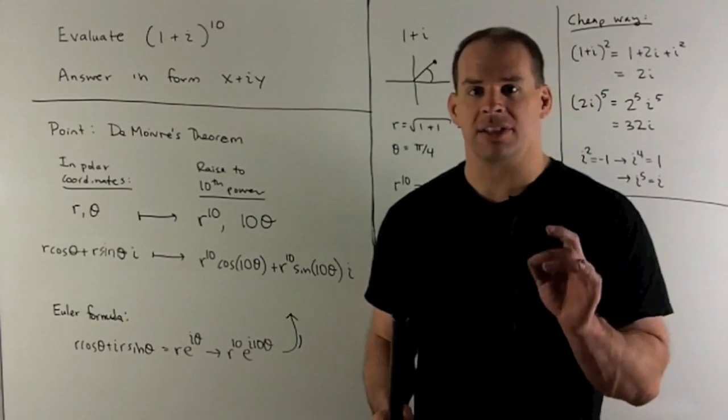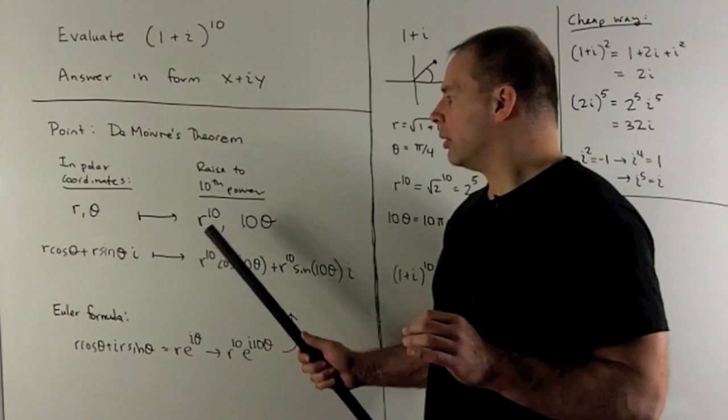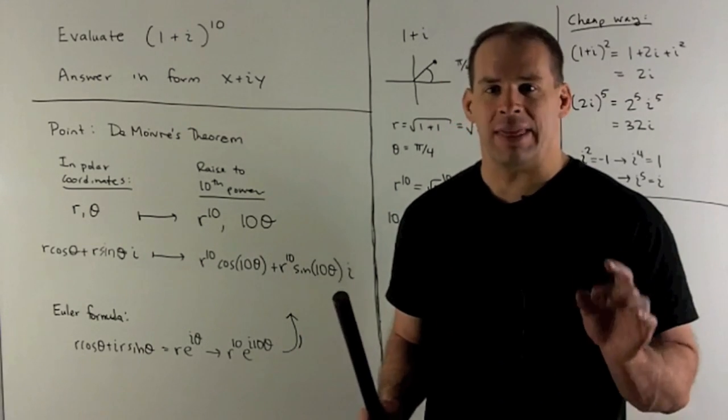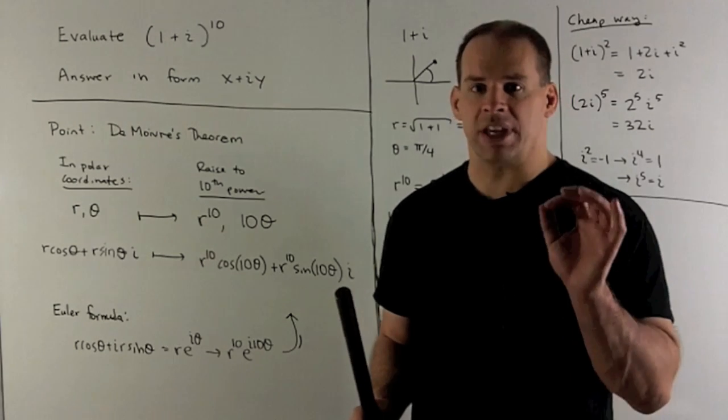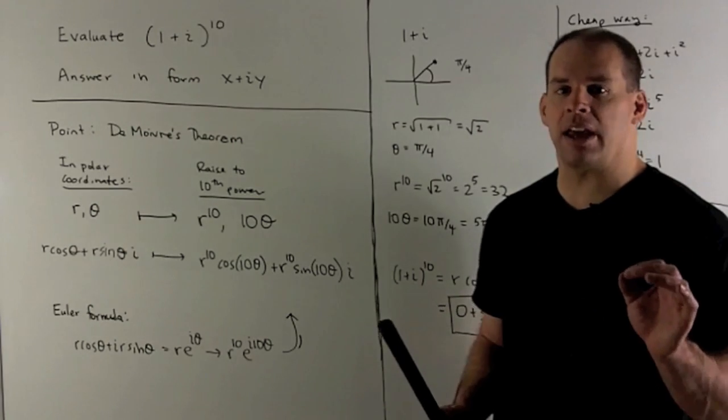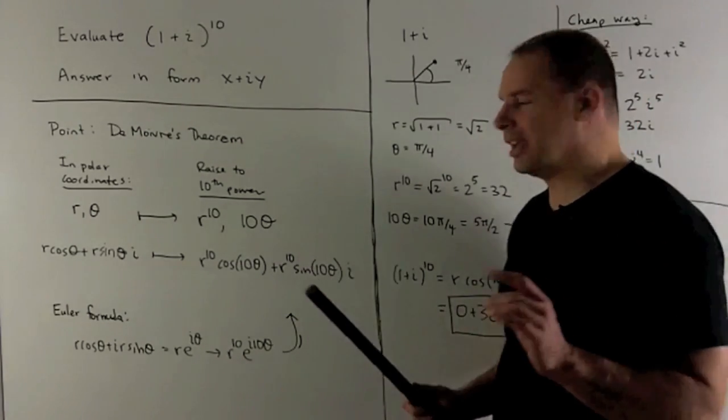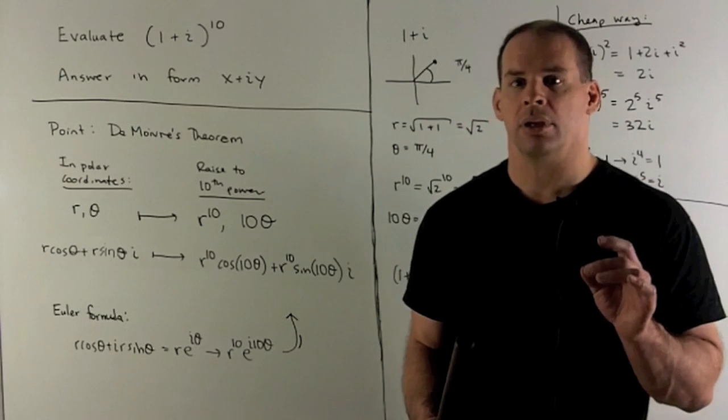Now, if I want to raise to the 10th power, the rule's going to be you take r, raise it to the 10th power, then take your angle theta, multiply by 10. So that's going to carry us to the point r to the 10 cosine 10 theta plus r to the 10 sine of 10 theta times i.